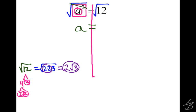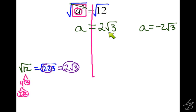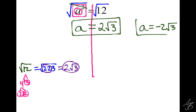So the square root of 12 is the same thing as 2 times the square root of 3. And we need to write that up here in the equation, so we get 2 times the square root of 3. Now in this problem, it's not as obvious, but that's not the only answer. Remember when we have a square on the variable, we could have two different answers. So A could be positive 2 square root of 3, or A could be negative 2 square root of 3.